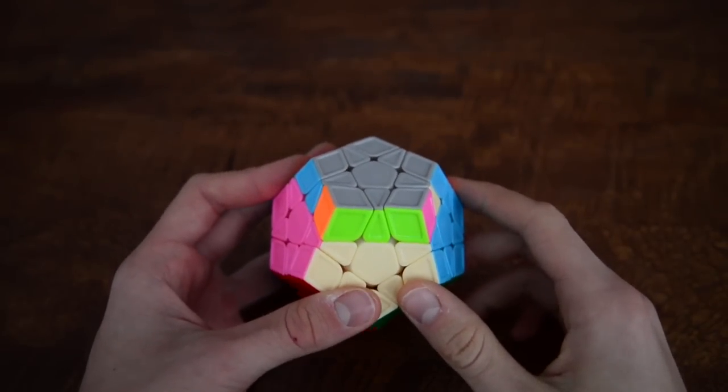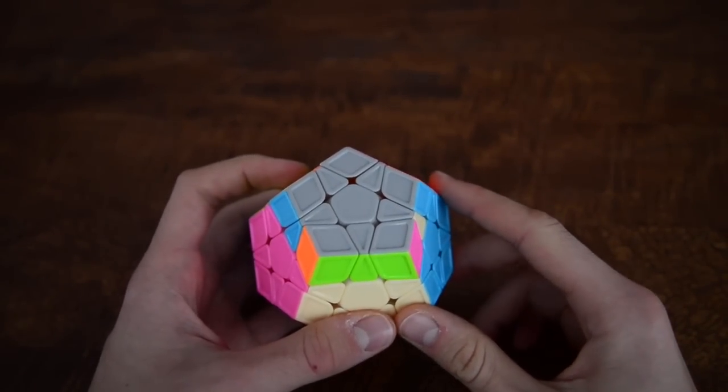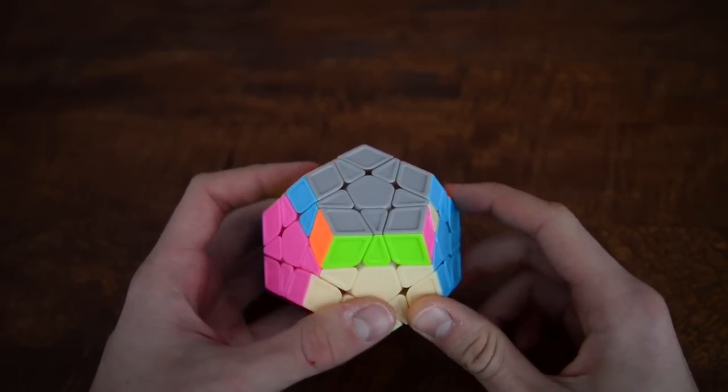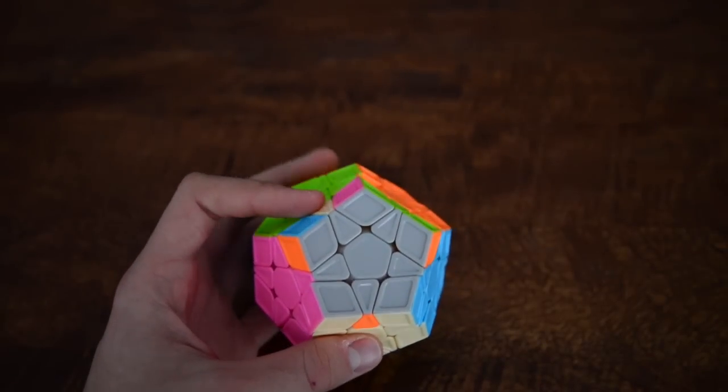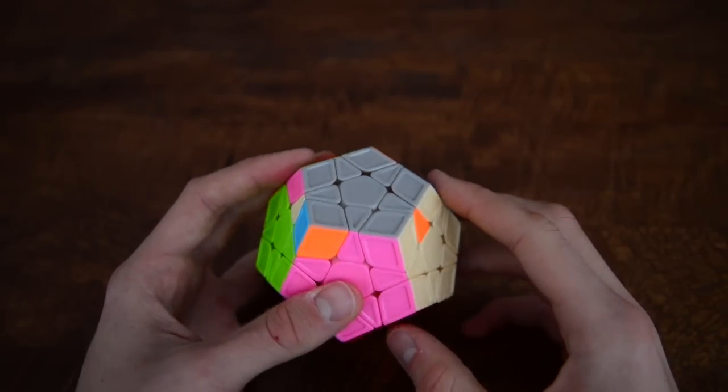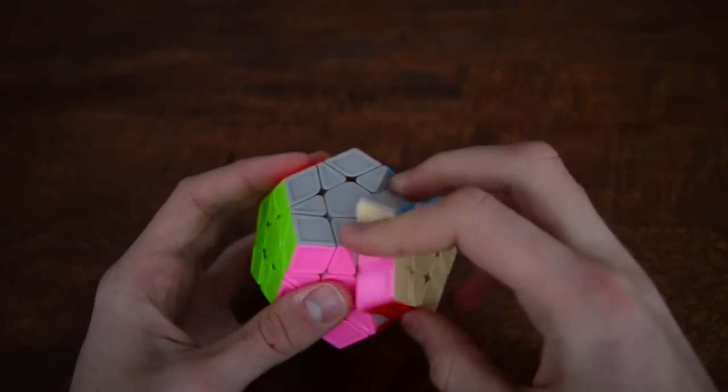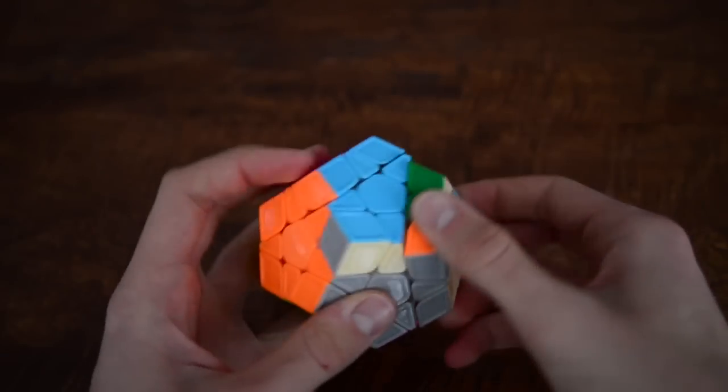And my times are still dropping. And I have done about 300 solves in the last two to three weeks. And dropped my average using these tips from CubeSkills, using the algorithms, I have dropped my average by like two minutes. I hope these tips worked for you. And other than that, I'll see you all next time.